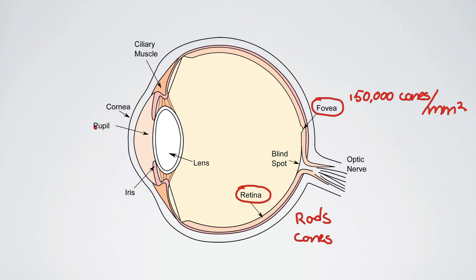When light comes in, what the lens does is it actually focuses that light onto the retina. Specifically, if you're focusing on an object, it focuses the light onto the fovea, and that allows you to see a lot of detail.